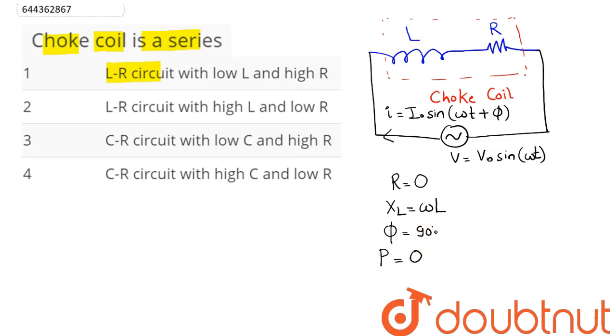If a resistance is used to control current in DC circuit, there is wastage of power due to joule heating effect in the resistance. Similarly, in AC circuit also, if we use only resistance, there is much loss of power.